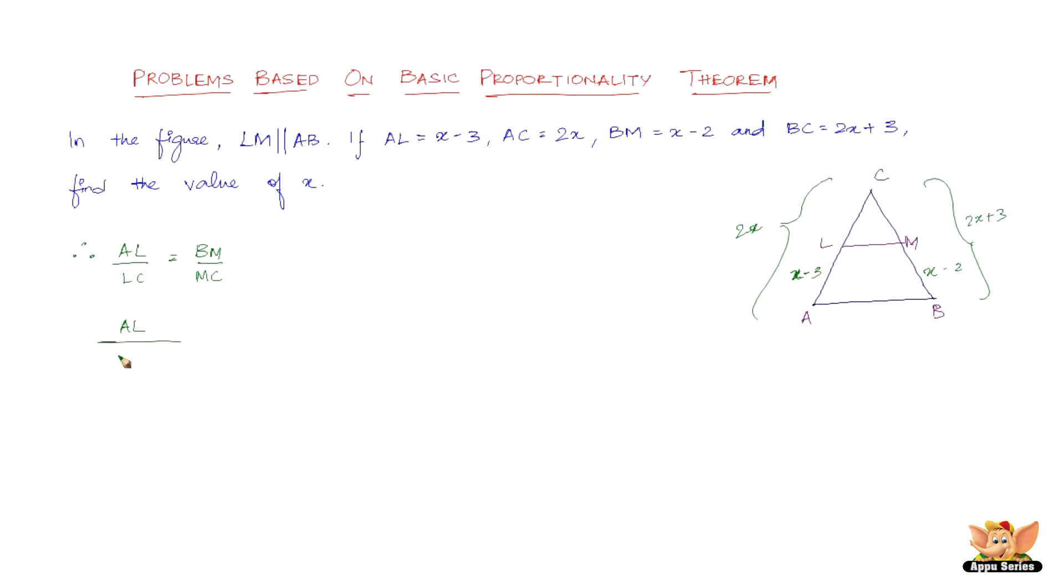AL is x minus 3. LC can be written as AC minus AL. We have BM which is x minus 2. We don't have MC, so we write MC as BC minus BM. Now substitute the values: x minus 3 over 2x minus (x minus 3) equals x minus 2 over 2x plus 3 minus (x minus 2).